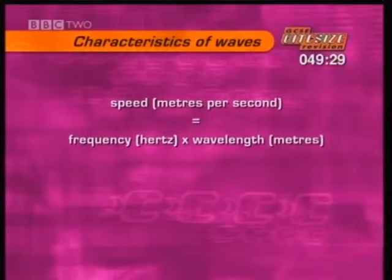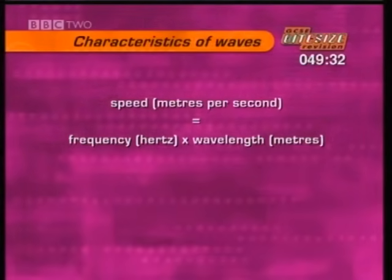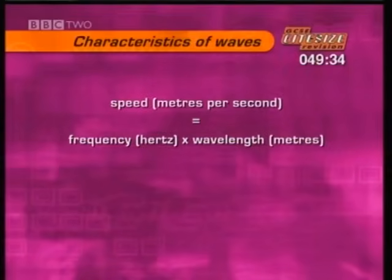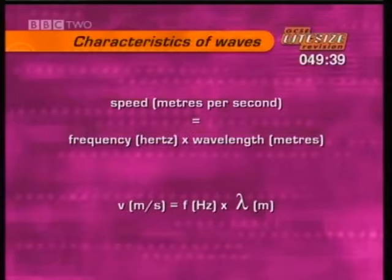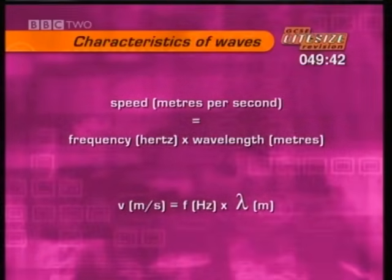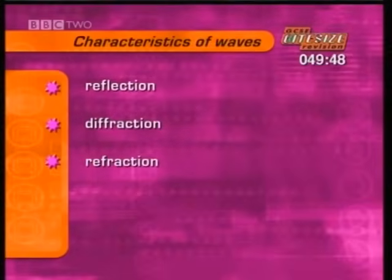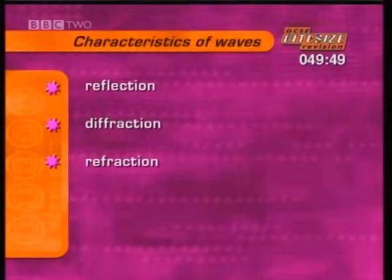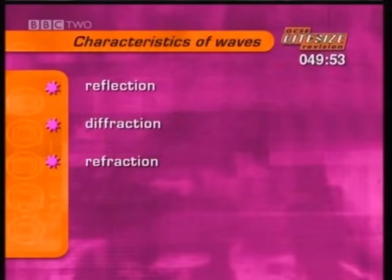You can calculate the speed of a wave. The speed of a wave in meters per second is equal to the frequency in hertz times the wavelength in meters. That's V equals F times lambda. All waves, including electromagnetic waves, also have the properties of reflection, diffraction and refraction.